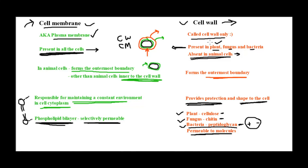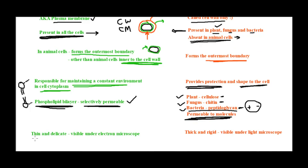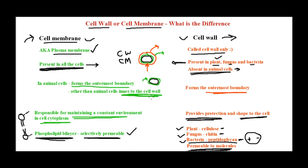The cell wall is permeable to all macromolecules — since its main function is protection, it simply allows all macromolecules to pass through without screening them. The last important point is that the cell membrane is thin and delicate, visible only under an electron microscope. The cell wall, being involved in protection, is thick and rigid, and because it is thick it is visible under a light microscope.